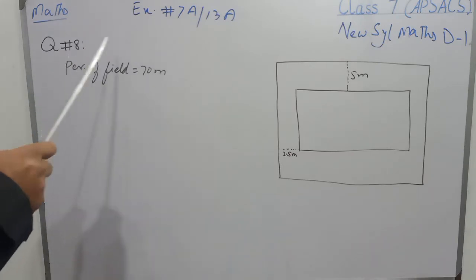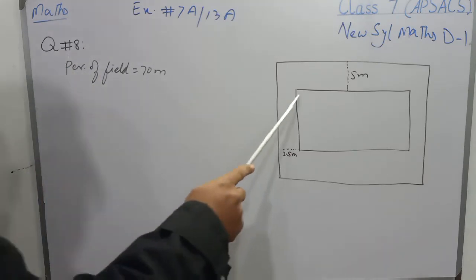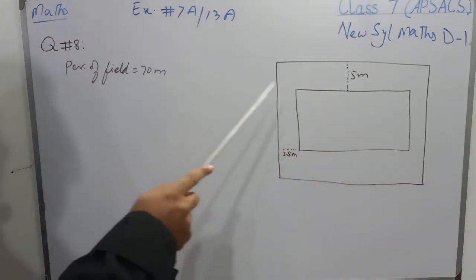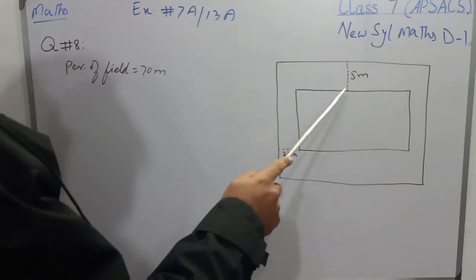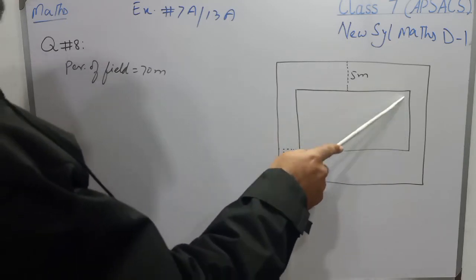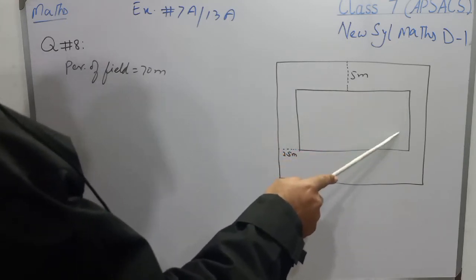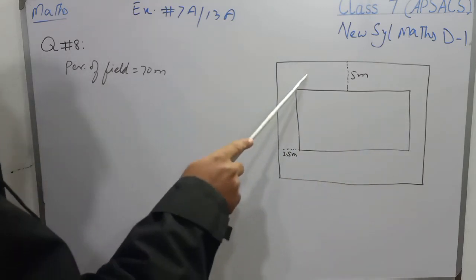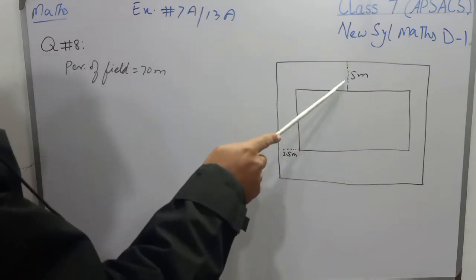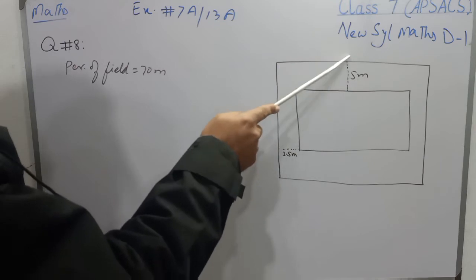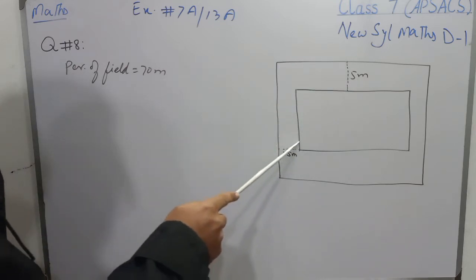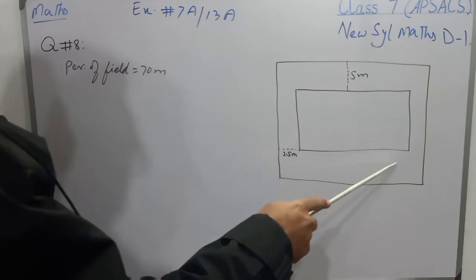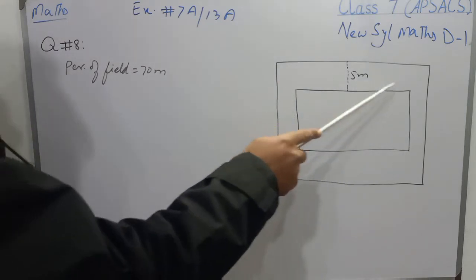Now question number 8 of the same exercise. There is a rectangular field whose perimeter is 70 meters and its length is 15 meters more than its width. There is a concrete path around this rectangular field whose width is 5 meters on two sides and 2.5 meters on the other two sides. We have to find the area of the path.